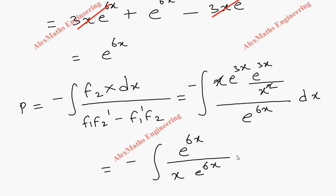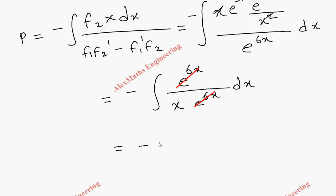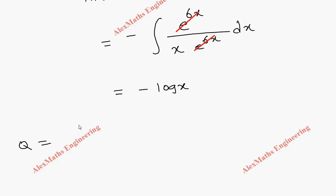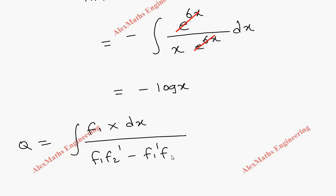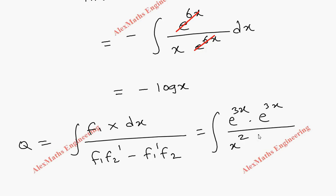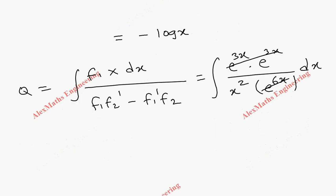After cancellation we have 1/x, and integrating 1/x gives log x, so p = -log x. For q: q = ∫(f₁·X dx) / (f₁f₂' - f₁'f₂) = ∫(e^(3x)·e^(3x)/x² dx) / e^(6x). The e^(6x) terms cancel, leaving ∫(1/x²)dx = -1/x. So q = -1/x.